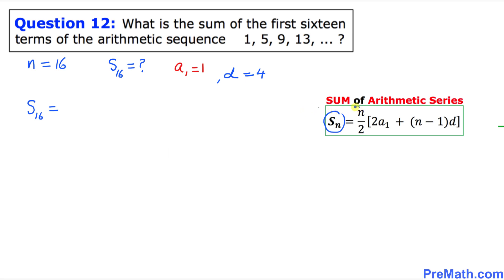And in our case n is 16 divided by 2 times, and then we have 2 times a1. So 2 times in our case a1 is 1 plus n. Once again, n is 16 minus 1 times our d. The common difference is 4.